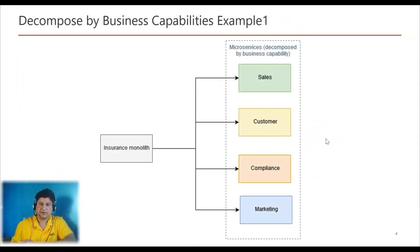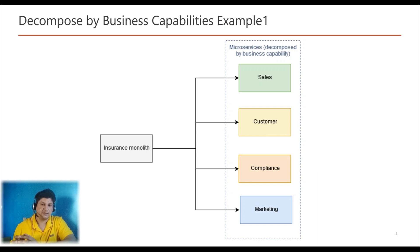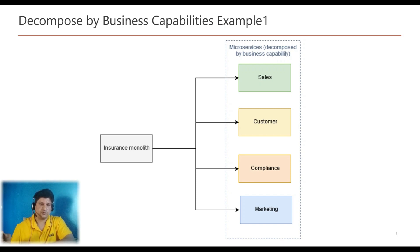Let's consider an example of an online bookstore. It can have the following business capabilities and corresponding microservices: book catalog management, inventory management, order management, warranty management, and so on. As a monolithic application, it is a single compact application containing all these functionalities. But when we decompose it into a microservice architecture, we create separate microservices for each of those business capabilities — inventory management, order management, warranty management, and catalog management.